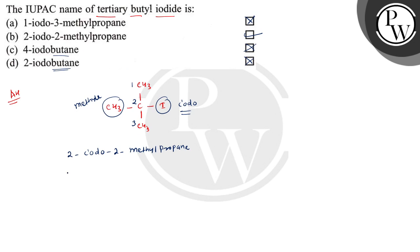So the correct option is B, which is 2-iodo-2-methylpropane. I hope you understood well. Best of luck.